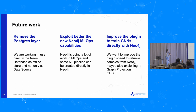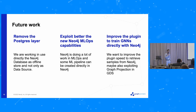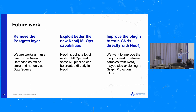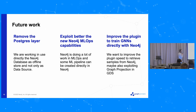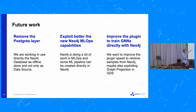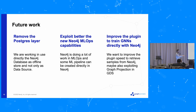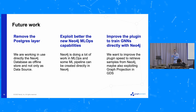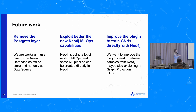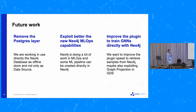Future work: we are currently using Feast with a Postgres layer, but working directly with a Neo4j database — creating multiple projections and exploiting new Neo4j features — could be very helpful. We also want to improve the plugin for training graph neural networks directly with Neo4j. Finally, we want to create a feature store specifically for graph neural networks — no such feature store exists yet — and the ideas presented here are the starting point for that.